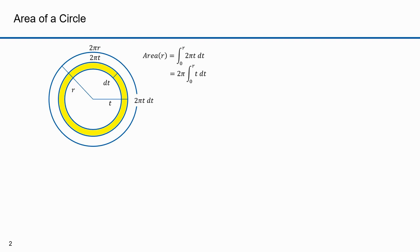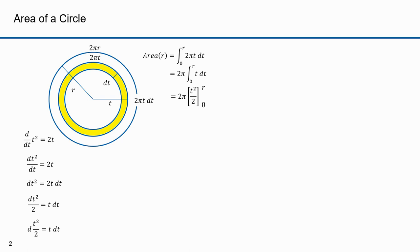I need to determine the anti-derivative of 2πt dt to resolve the integral. 2π is a constant so I can move that outside the integral. The derivative of t² is 2t, so I can express dt² over 2 as t dt. The anti-derivative of t is t²/2, and making that substitution, I evaluate t²/2 from 0 to r and multiply by 2π. That is the formula for the area of a circle.